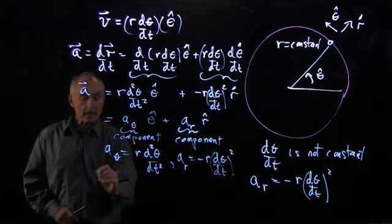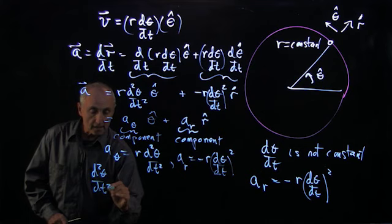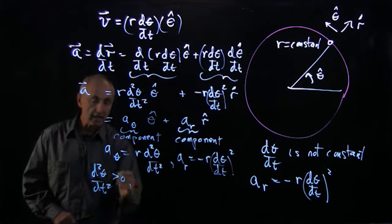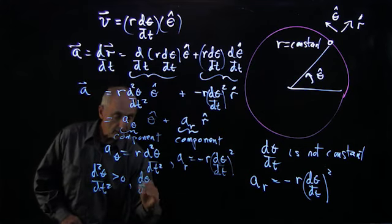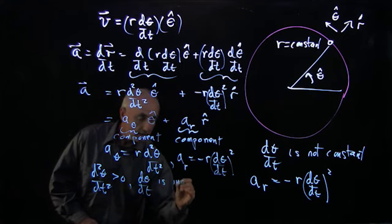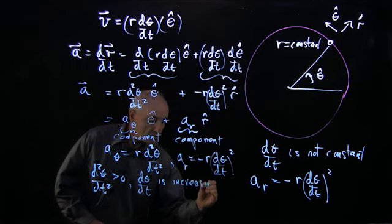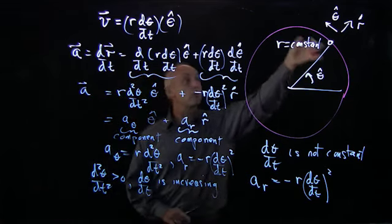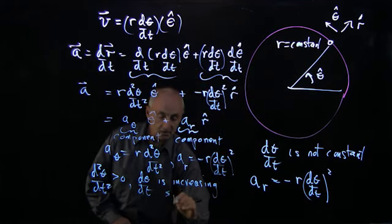So when d²θ/dt² is positive, it means dθ/dt is increasing. And so if this object is going in this clockwise direction, we call that speeding up.